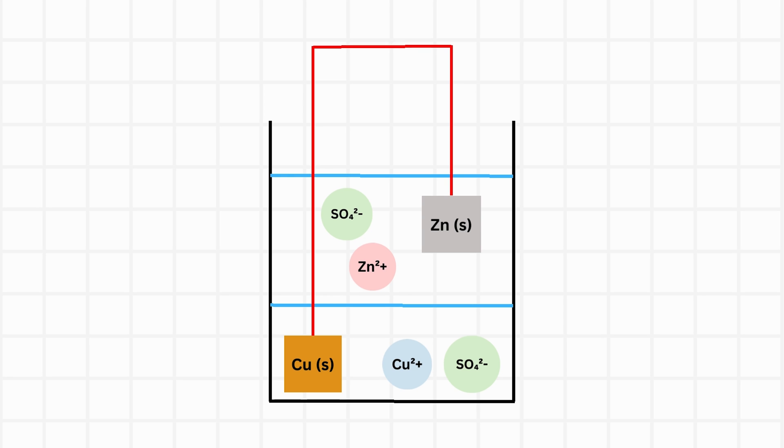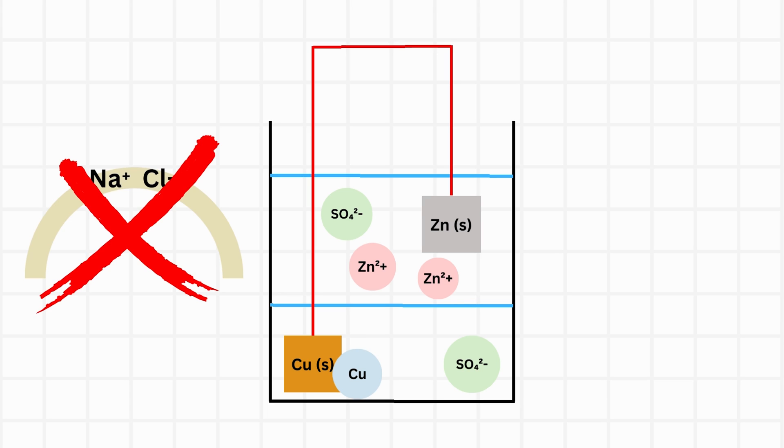The principle of gravity cell is almost the same as that of Daniel cell. Zinc is oxidized and copper is reduced. However, as you can see, there is no salt bridge in the gravity cell. That's because ions can travel freely between the borders of each solution.